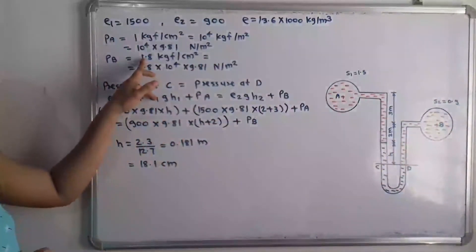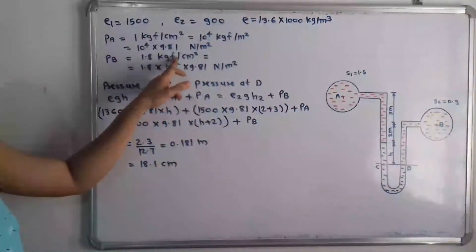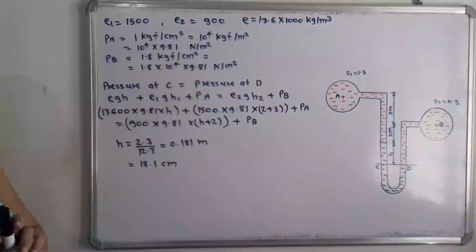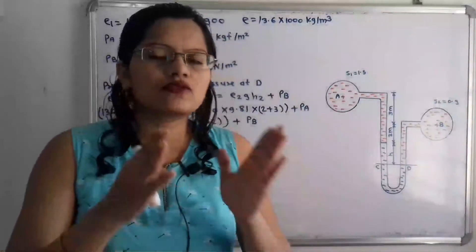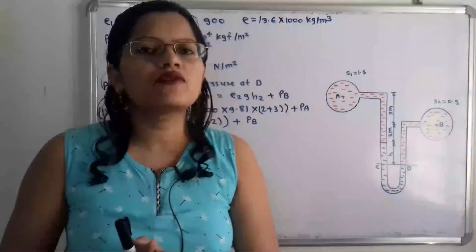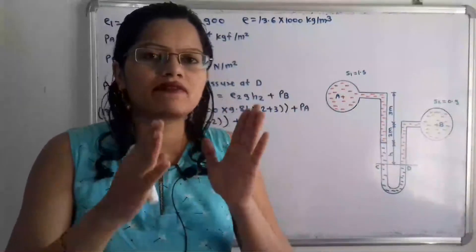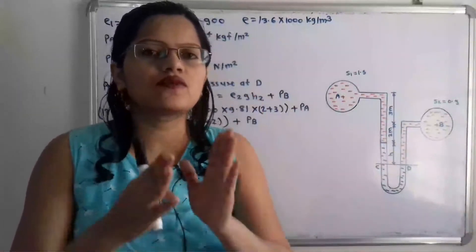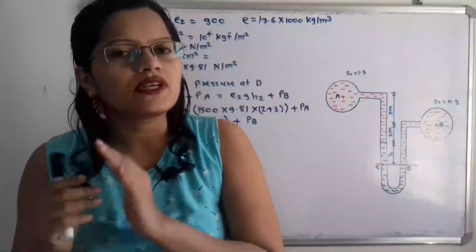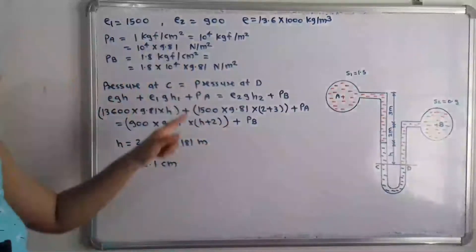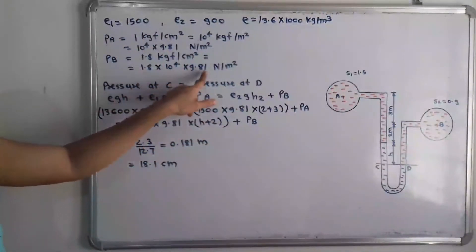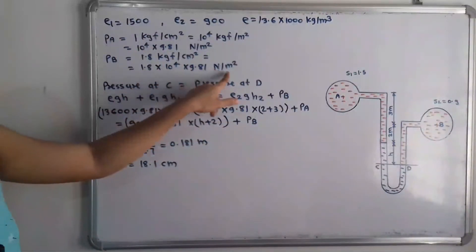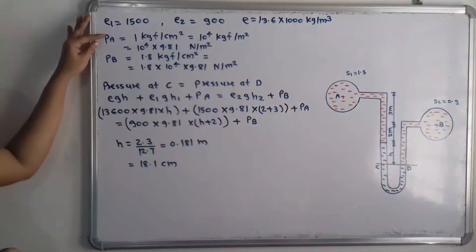Similarly, PB = 1.8 kgf/cm², which we convert to N/m² by multiplying by 10⁴ × 9.81, giving PB = 1.8 × 10⁴ × 9.81 N/m². Both pressures PA and PB are now in standard units.